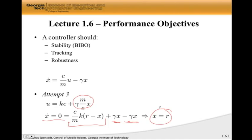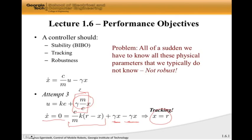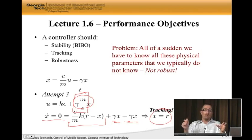So voila, we've solved the problem. We have perfect tracking. Or have we? No, we have not. And why is this? Well, we have stability, we have tracking, but we don't have robustness. Here are three things that we don't know: gamma, m, and c. And our controller depends explicitly on these coefficients. So all of a sudden, we have to know all these physical parameters that we don't know. So this is not a robust control design. So attempt three is a failure.